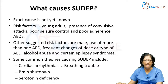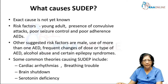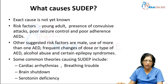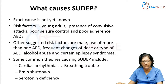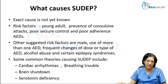The exact reason or cause is not known. Risk factors include being a young adult, presence of convulsive seizures, poor seizure control, poor adherence to anti-epileptic drugs, and use of many anti-epileptic drugs. Other risk factors include being male, use of more than one anti-epileptic drug, frequent changes in the dose or type of anti-epileptic drugs, alcohol abuse, and certain epileptic syndromes.